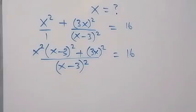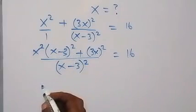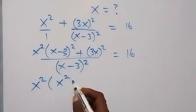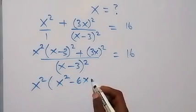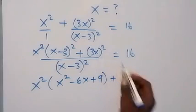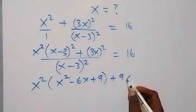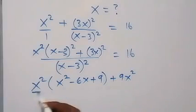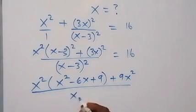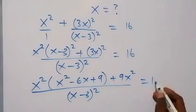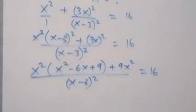In the next step, let's expand this bracket here. So this gives us x² into the bracket: we have x² minus 6x plus 9, plus here this is also 9x² — squaring the 3 and x — divided by (x - 3)², equals 16.